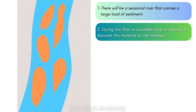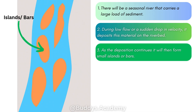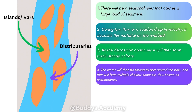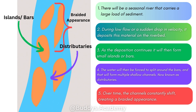The material deposited includes all your sand, gravel, and silt. As deposition continues, it forms small islands or bars — as you can see in the diagram. Those small islands form because of continuous deposition. The water is then forced to split around the bars or islands, forming multiple shallow channels. These smaller channels are known as distributaries, and over time the channels continuously shift, creating a braided appearance.